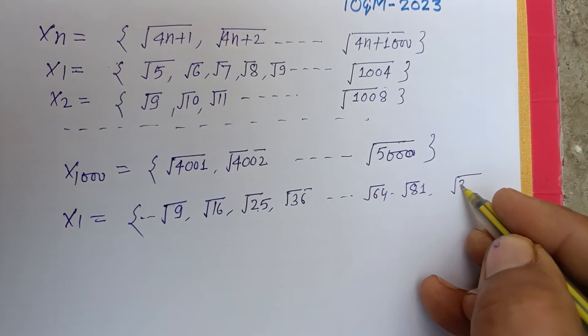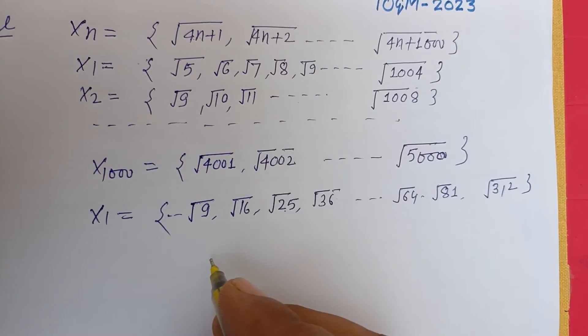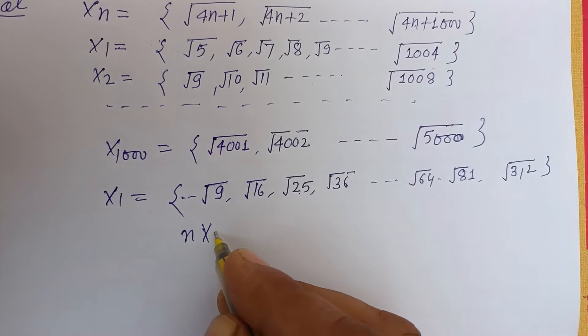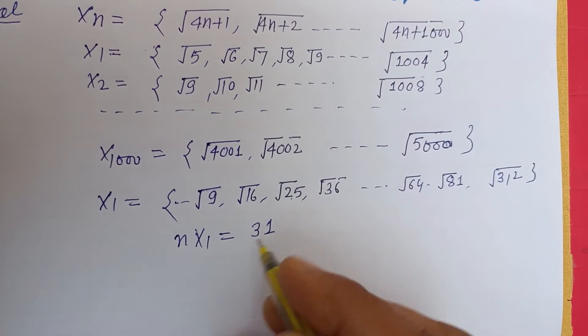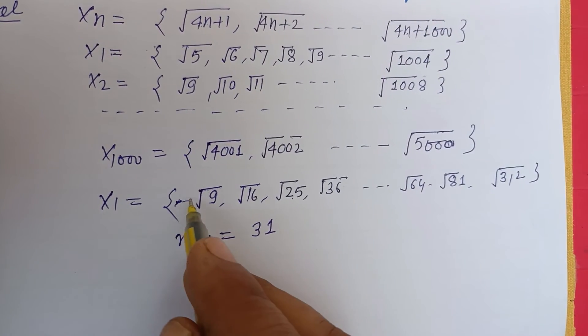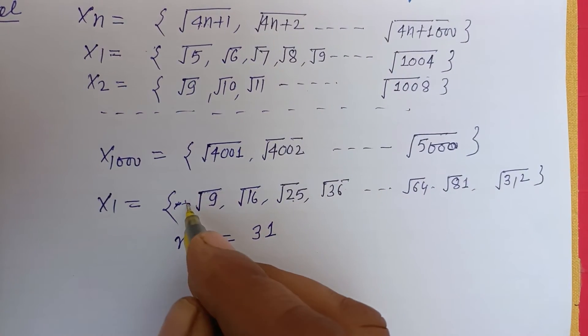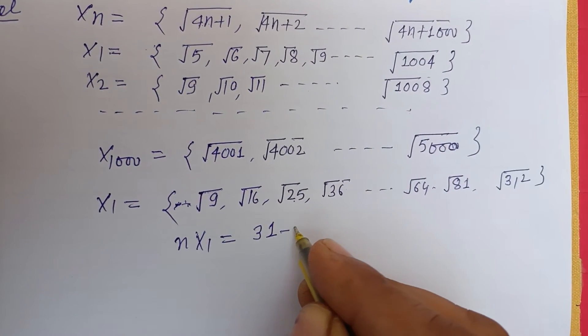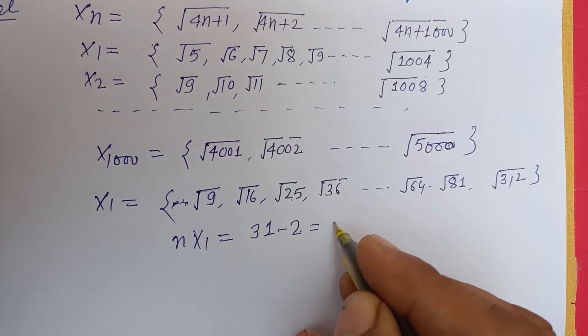So n(X1) is 31, but 2 are remaining: 1 and 4, which are not present in this set. So we remove them. So 31 minus 2 equals 29 is the number of integers which are perfect squares in this set.